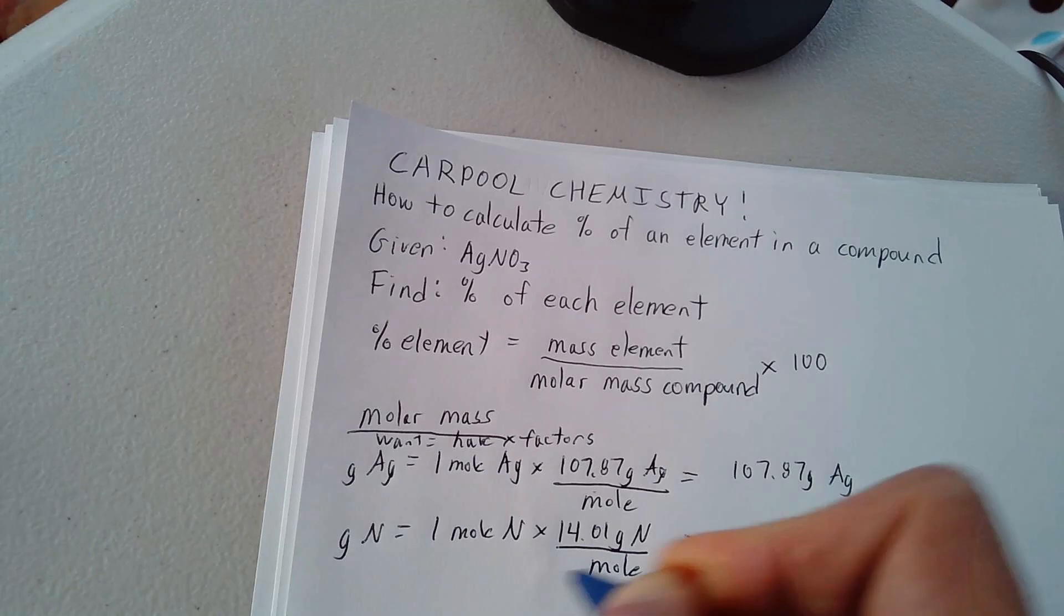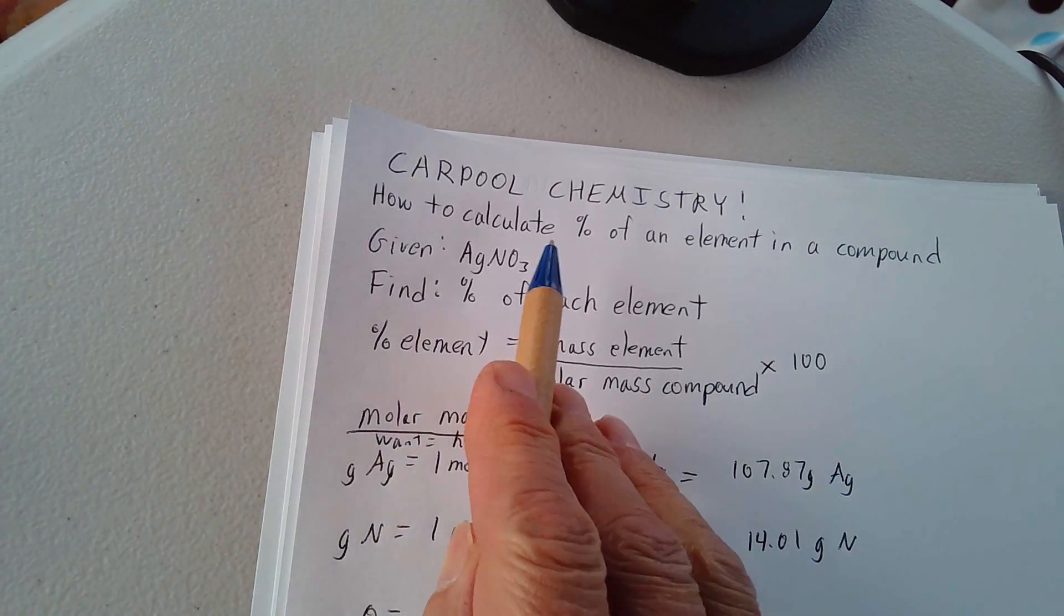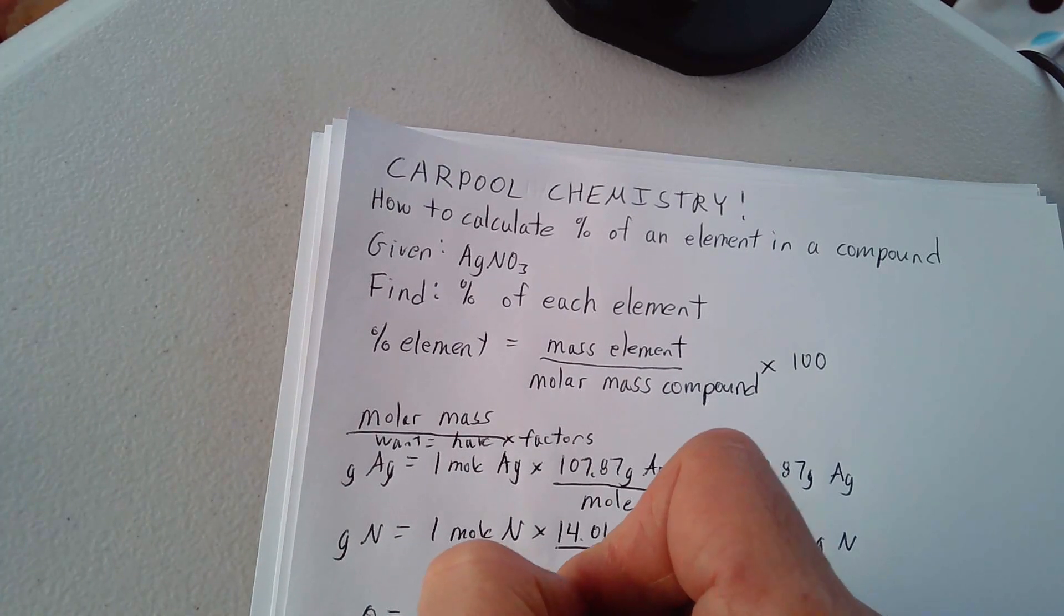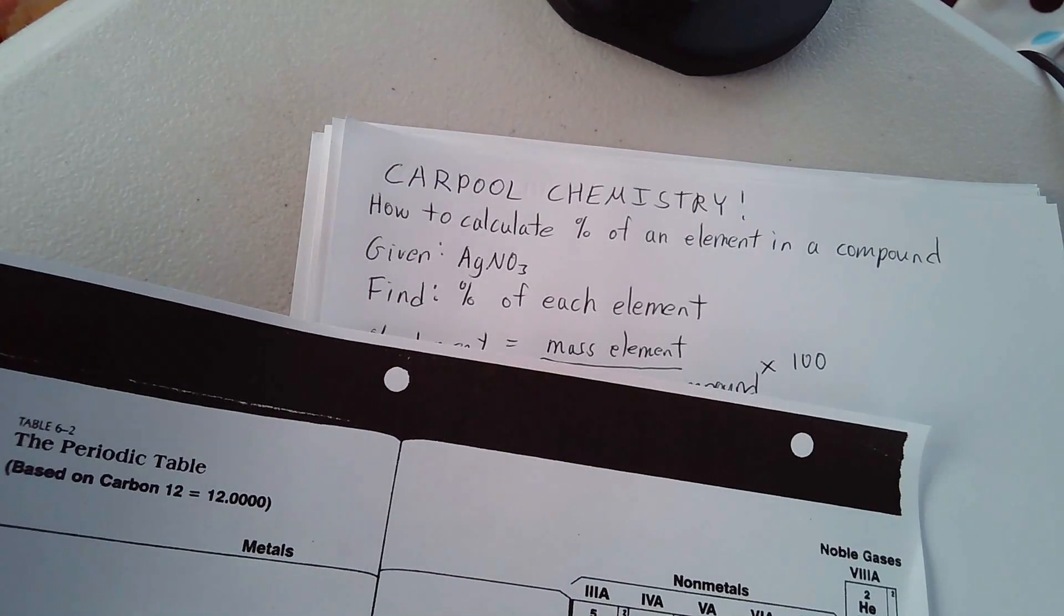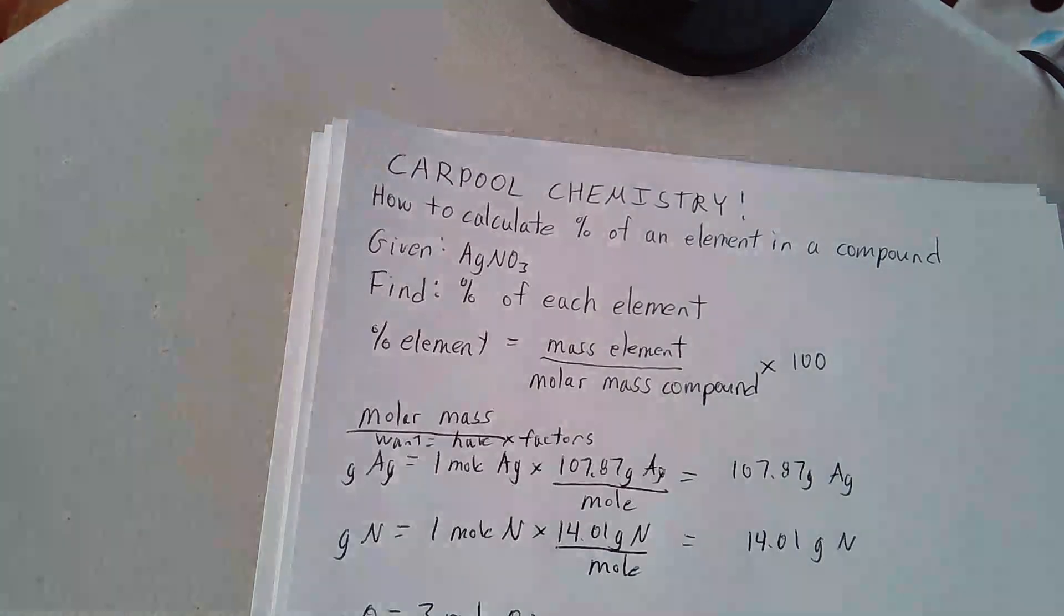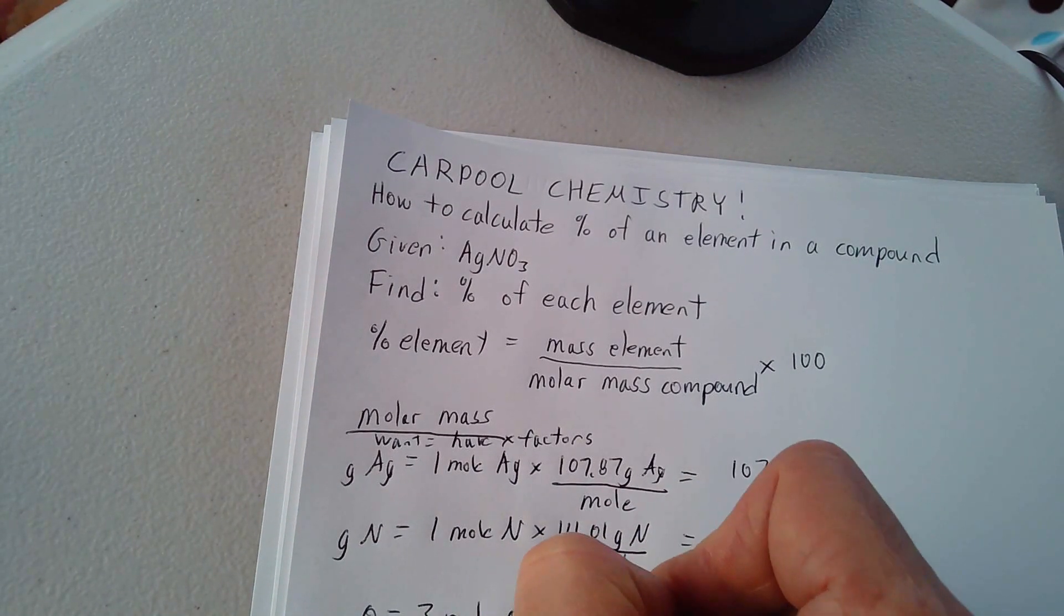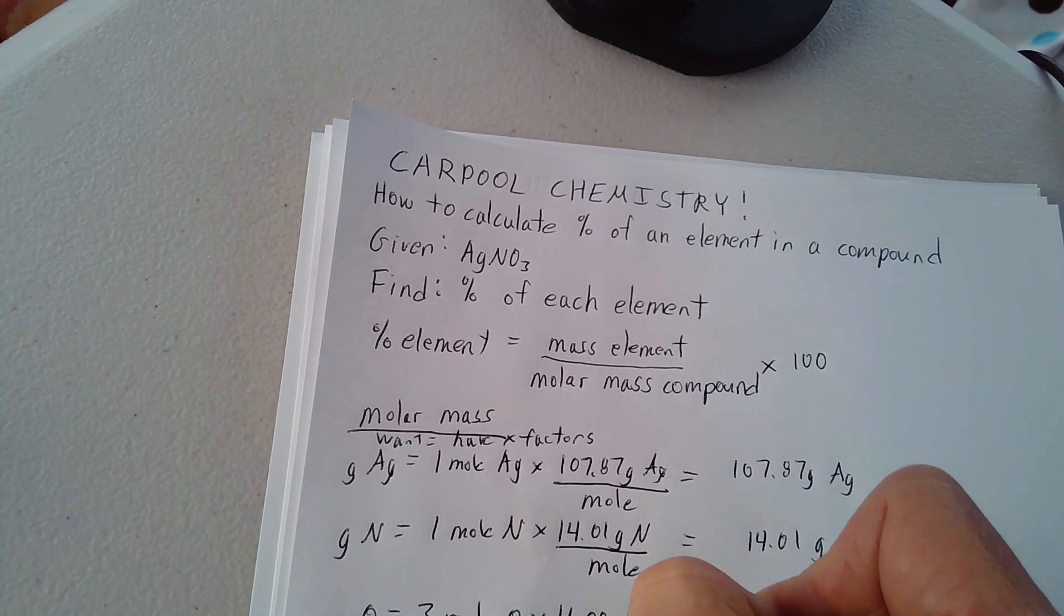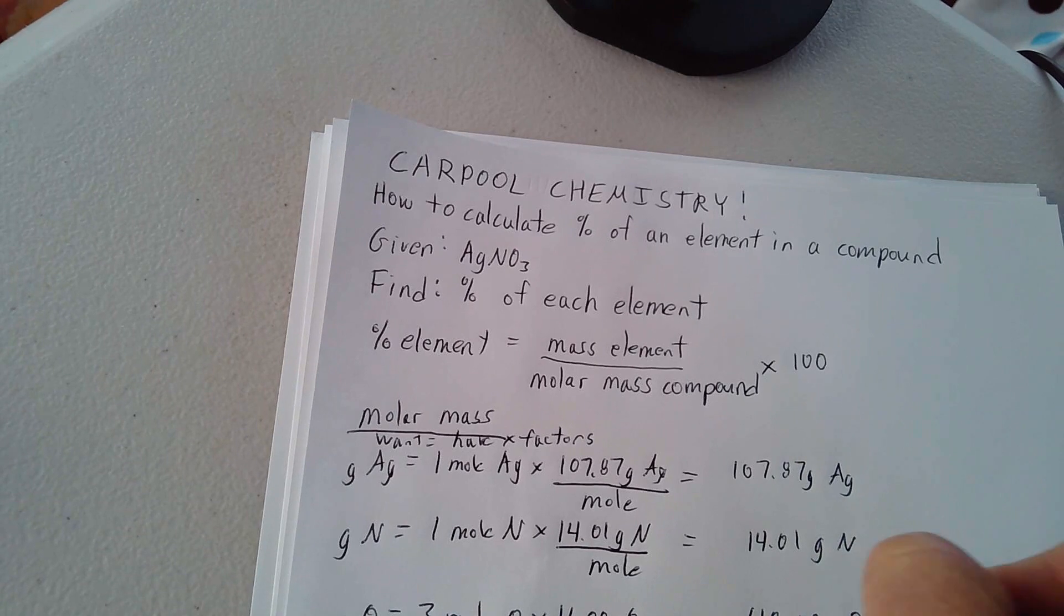This one is silver. And then finally, the grams of oxygen. We have three moles of oxygen there. We have three moles times, and oxygen, we're looking at the atomic mass, 15.9994, which really rounds out to the nearest one-hundredths, 16 grams of oxygen per mole.